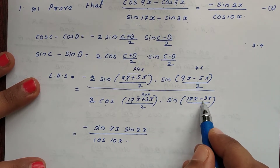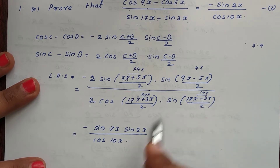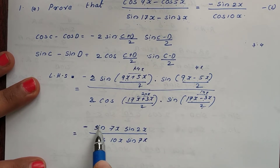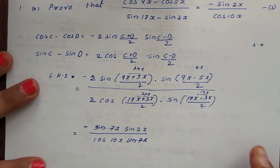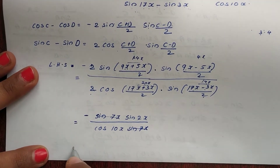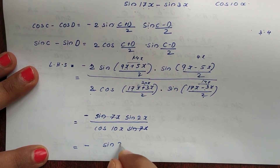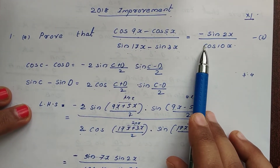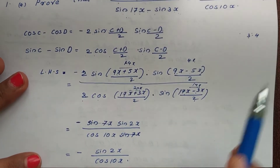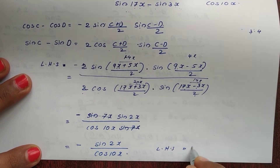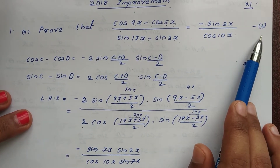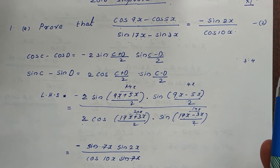Now sin7x appears in both numerator and denominator and cancels out. The result is minus sin2x divided by cos10x, which proves the identity.